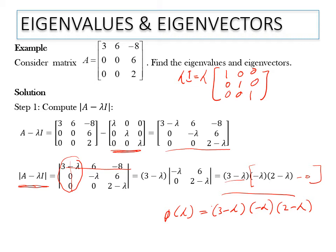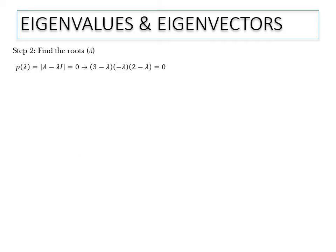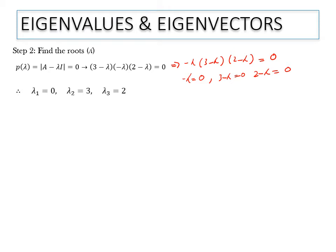Now in step 2, we write the polynomial and set it equal to 0: negative lambda times (3 minus lambda) times (2 minus lambda) equals 0. Separating each factor: lambda equals 0, 3 minus lambda equals 0, and 2 minus lambda equals 0. So we get lambda 1 equals 0, lambda 2 equals 3, and lambda 3 equals 2. These are the eigenvalues. For each eigenvalue, we now need to find the eigenvectors.